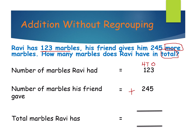Now, in the ones digit, we have 3 and 5. Which is the biggest number? 5 is the biggest number. That's why keep 5 in your mind and open 3 fingers. Addition means going forward — after numbers. 5 after: 6, 7 and 8. What is 3 plus 5? 8.